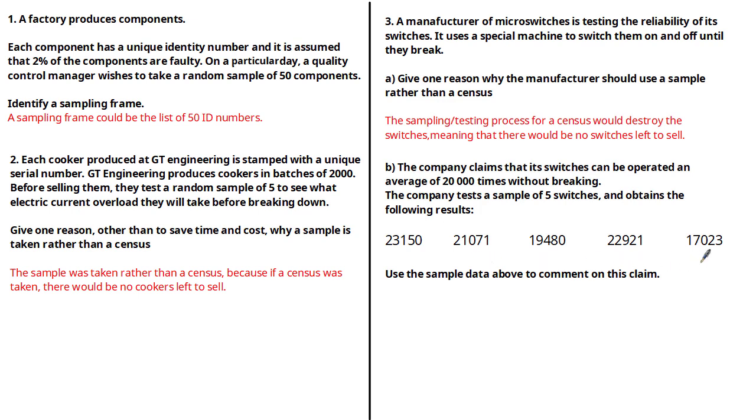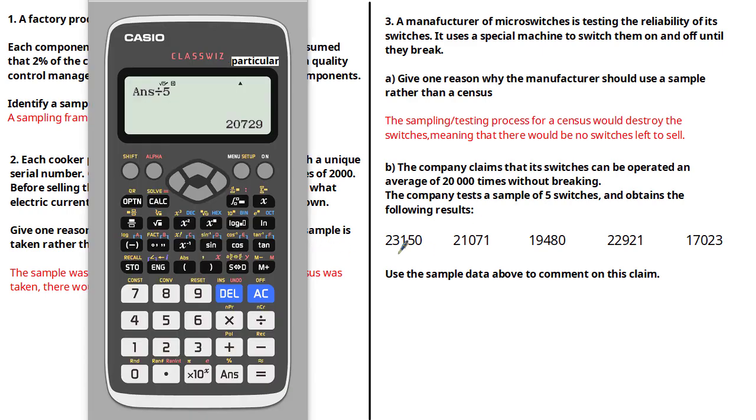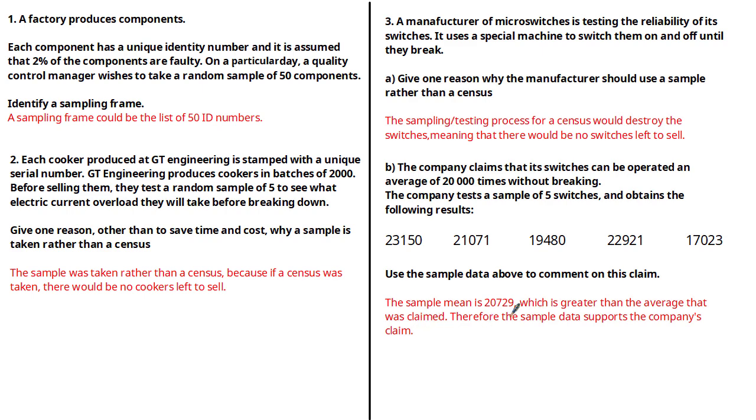Now as we discussed earlier, our sample represents the population. We don't know how good of a representation it is because we don't know what the population size is, but we do know it is some representation. So we can use it to make a comment about the company's claim. Given the fact that the average of the sample is 20,729, which is greater than 20,000, we can say that the sample mean is 20,729, which is greater than the average that was claimed, and therefore the sample data supports the company's claim. The next question says suggest one way the company could improve its prediction. Given the fact that we only tested five switches in the sample, if we assume that the company has way more than five switches, then we can say that to improve its prediction, the company could test a larger number of switches.